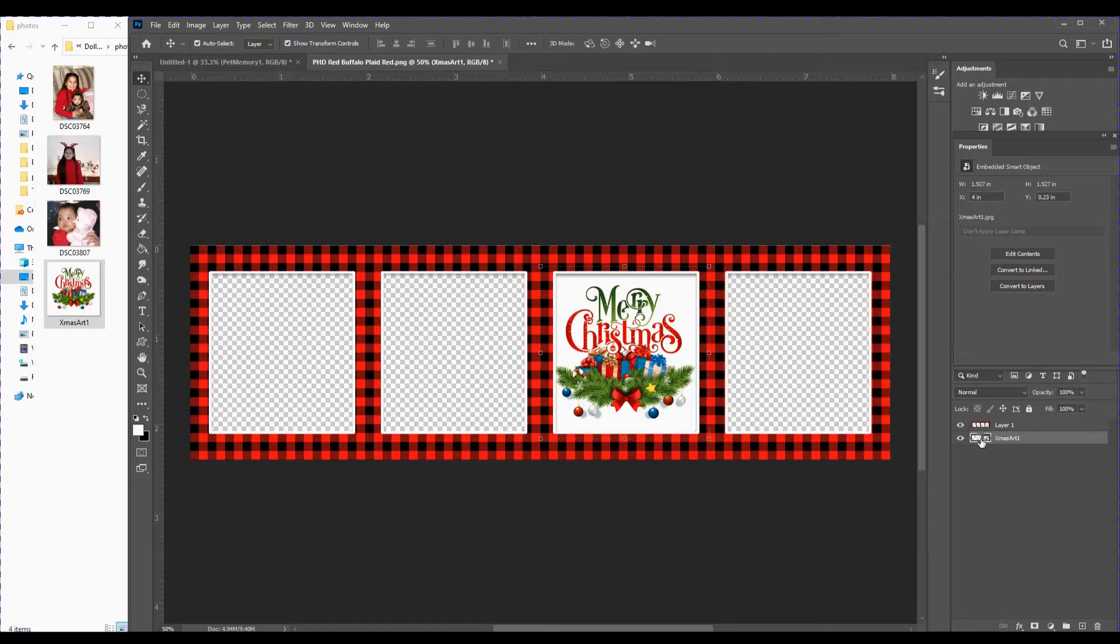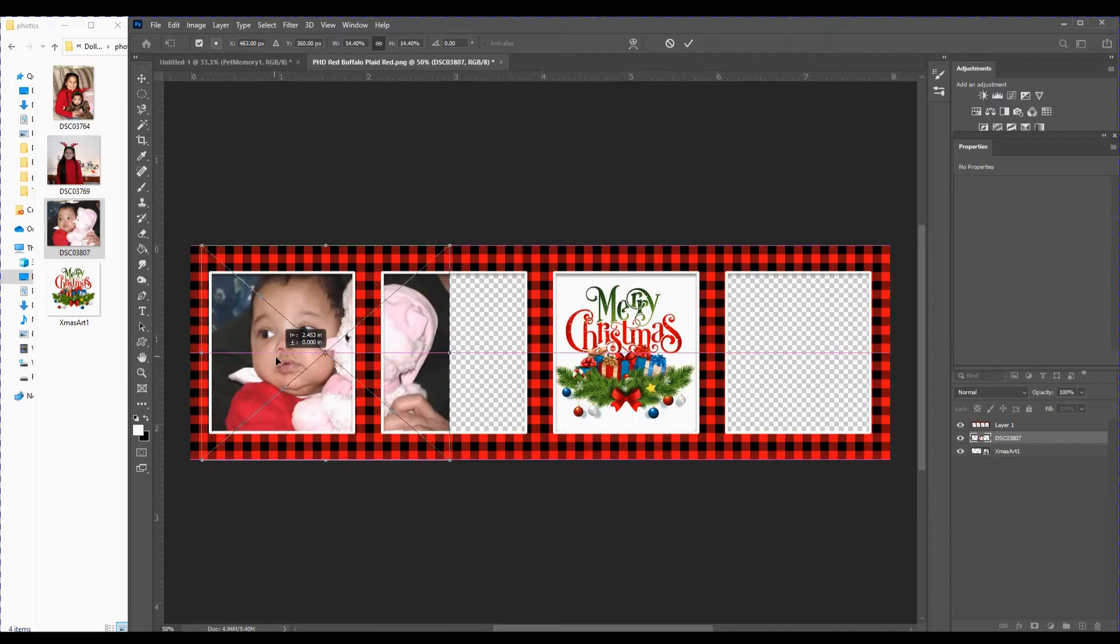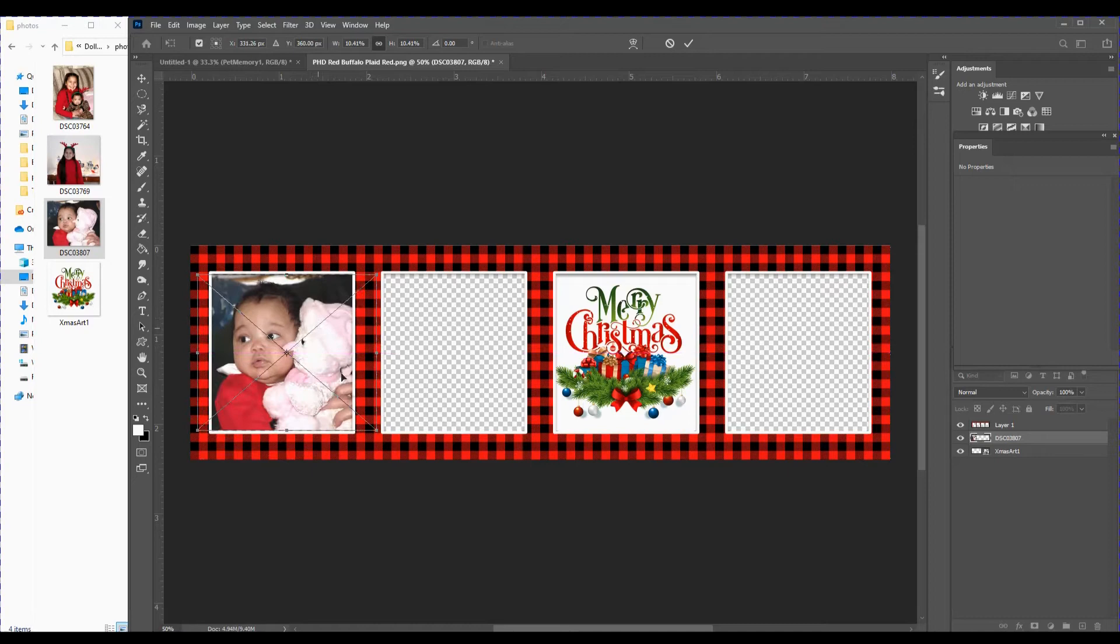Now if I click on that layer any subsequent layers that I pull on top will go below the actual template. So if I drag my next photograph onto here you can see it went behind the template so that's great and then I'll just resize this photo.